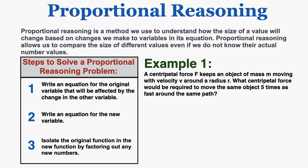In this lecture I'll go over the rules and four examples for using proportional reasoning in physics. Proportional reasoning is a method we use to understand how the size of a value will change based on changes we make to variables in its equation. It allows us to compare the size of different values even if we do not know their actual number values.